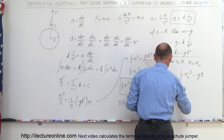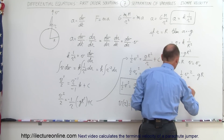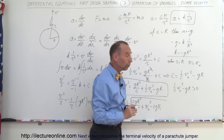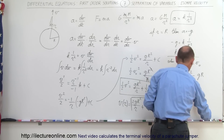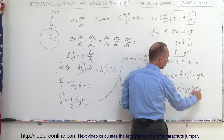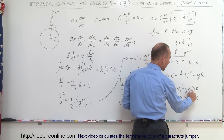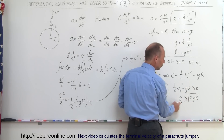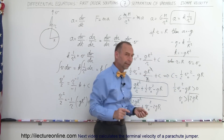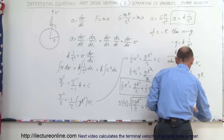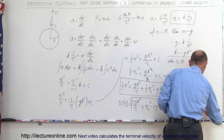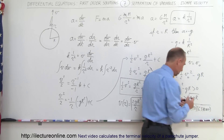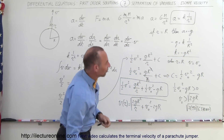That requires one-half V-initial squared minus gR to be greater than zero. Moving the gR term over and multiplying both sides by 2, then taking the square root: V-initial must be greater than the square root of 2gR. With g equals 9.8 meters per second squared and the Earth's radius equals 6,378,000 meters, we can calculate the escape velocity.